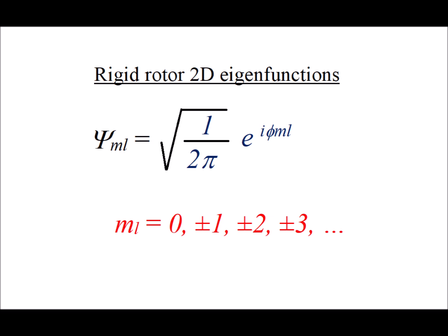Now the fully normalized eigenfunctions for this situation are square root of 1 over 2π, that's our normalization factor, times e to the i φ m sub l.